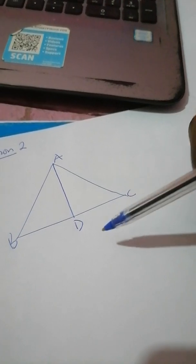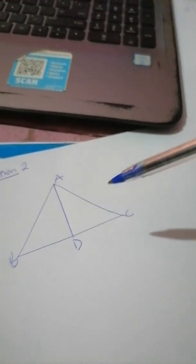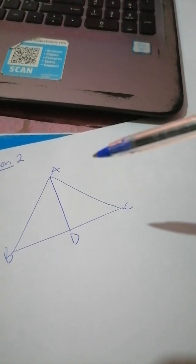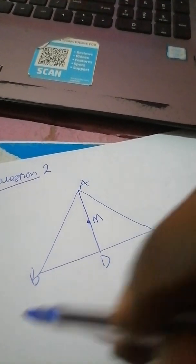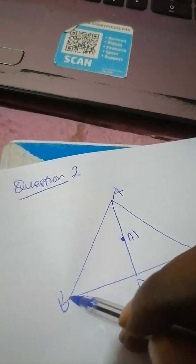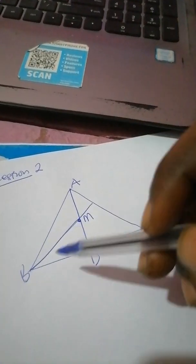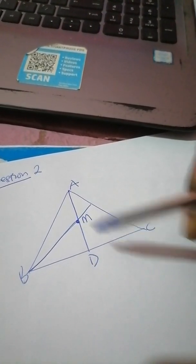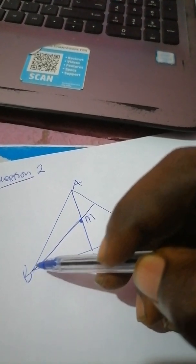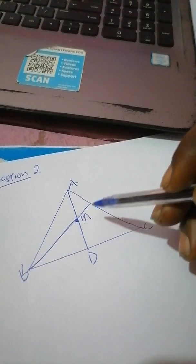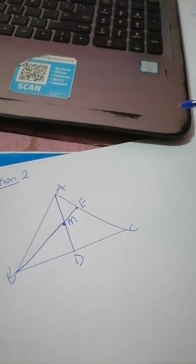So the median AD divides triangle ABC into two equal halves, meaning point D is a midpoint because it divides line BC into two equal parts. The question is also saying there is a line joining the midpoint of the median, so the median has a midpoint — we'll call it M. We draw the line joining the midpoint of the median to the opposite vertex B, and it will touch the side opposite the vertex, which is AC. We'll call this point E.